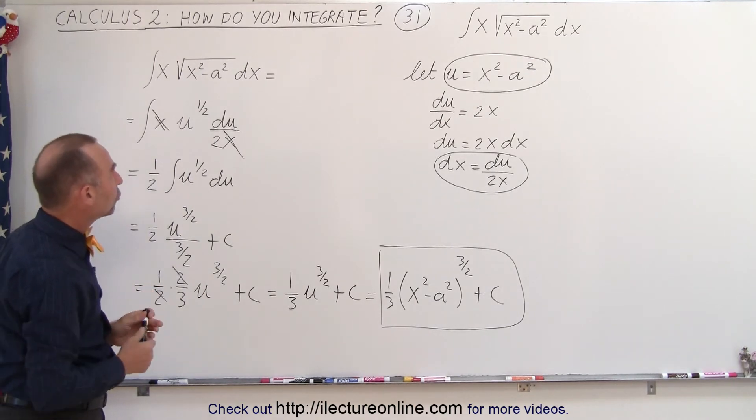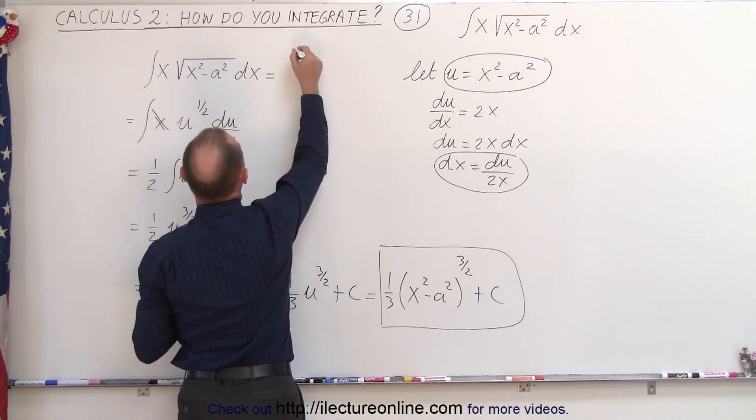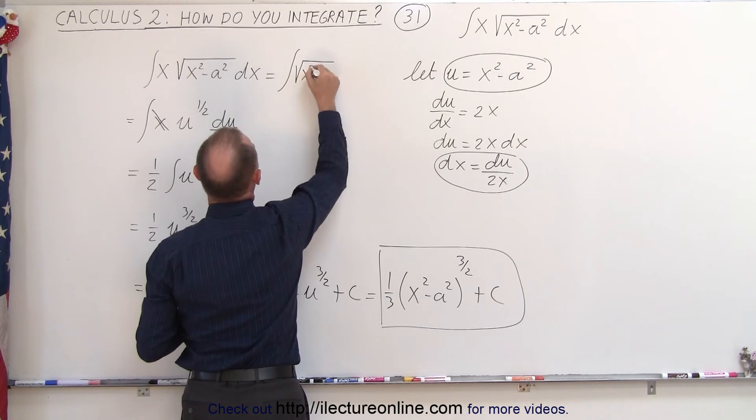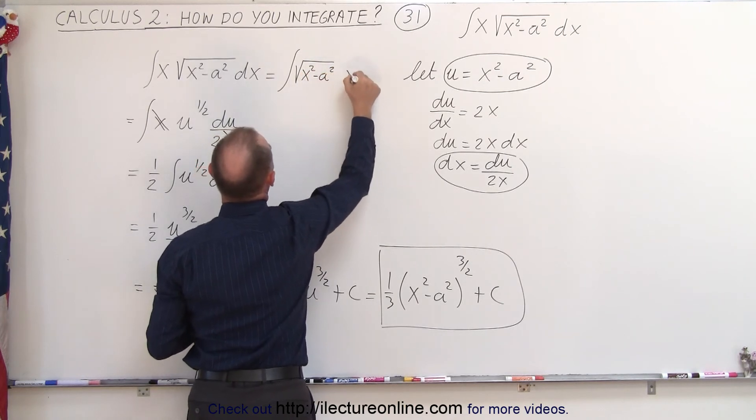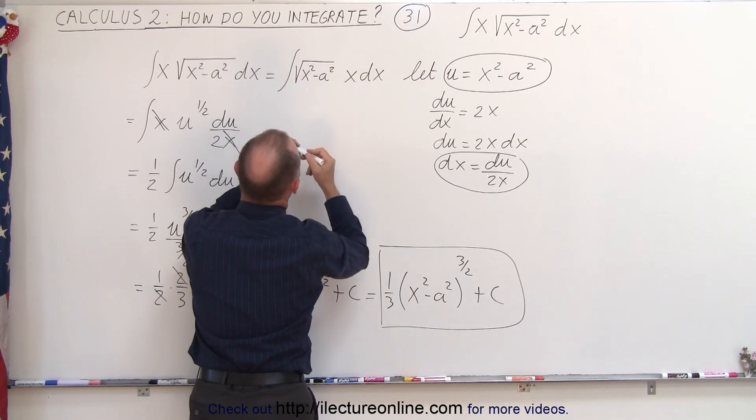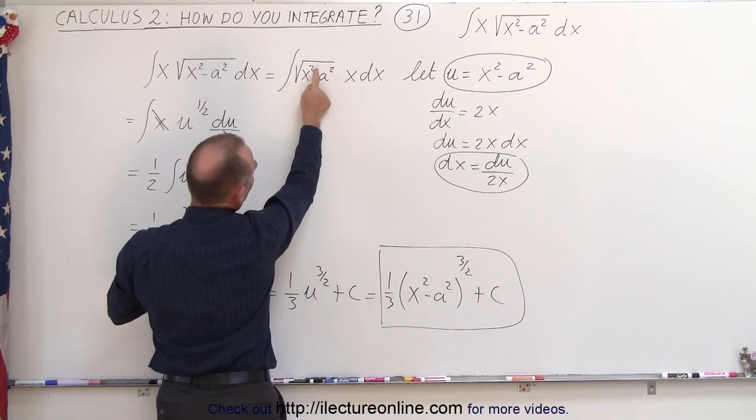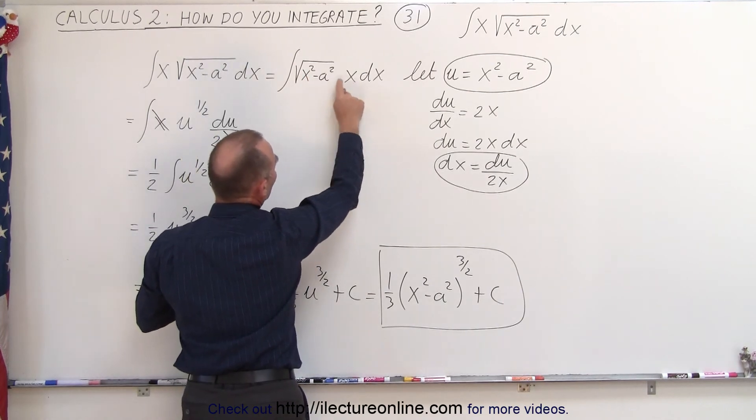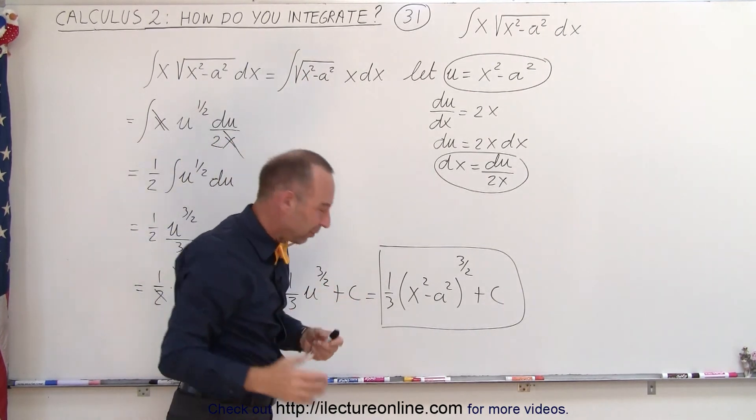One more thing you could do is if you rewrite it like this, we can rewrite this as the square root of x squared minus a squared times x dx, and then we look at what's inside the radical. Now if we take the derivative of that, we realize we end up with a 2x. So in order to integrate it, we need a 2x dx, so it's another way of looking at it.